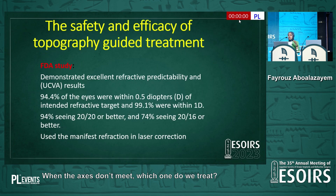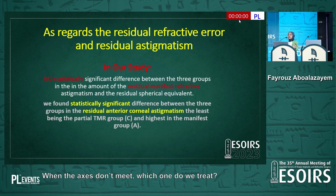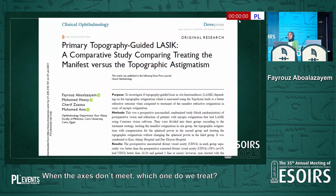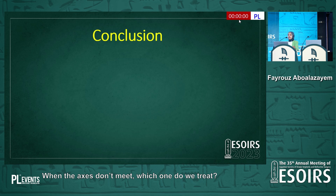The safety and efficacy were studied in the FDA study — it was safe and effective — with 94% of eyes within 0.5 diopters of the targeted astigmatism. In our study, a statistically significant difference was found in unaided post-operative visual acuity between the three groups, and it was published in Clinical Ophthalmology.